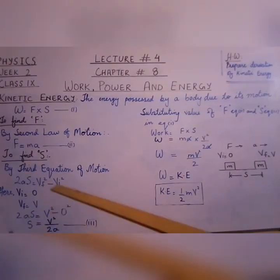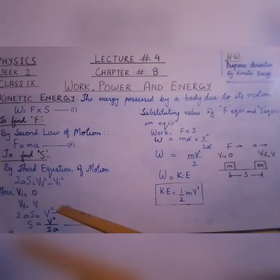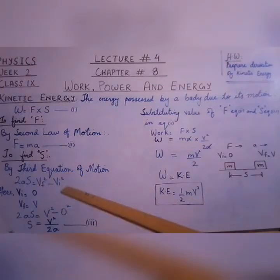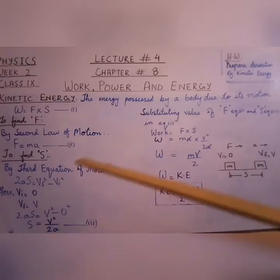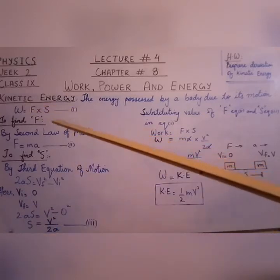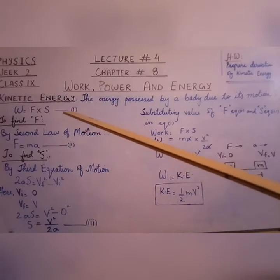When we substitute zero in place of vi and v in place of vf, our equation becomes v squared equals 2aS. We can divide both sides by 2a, and we get S equals v squared upon 2a.